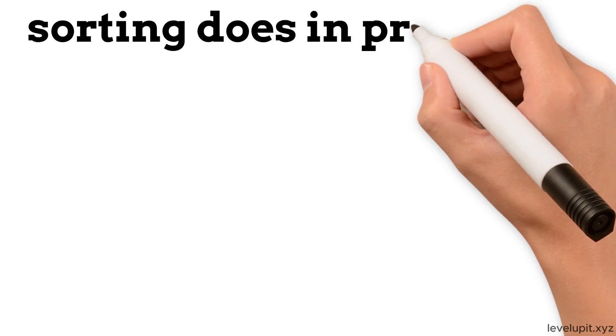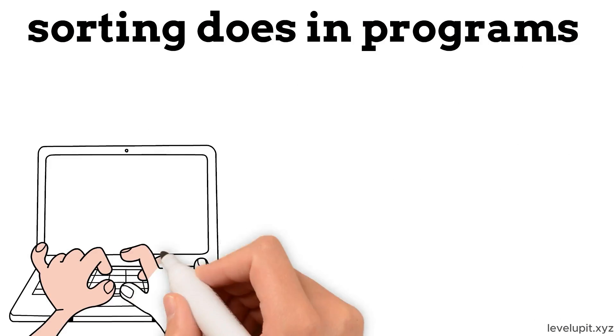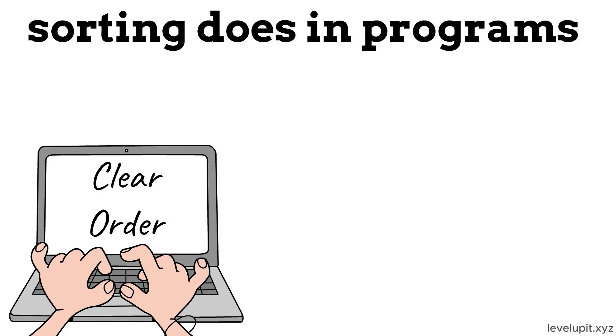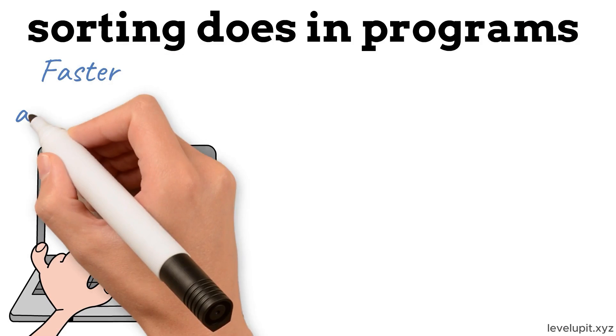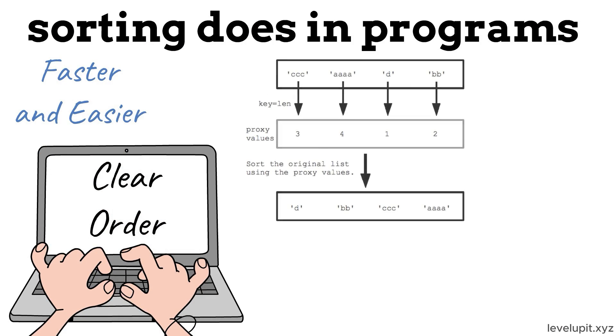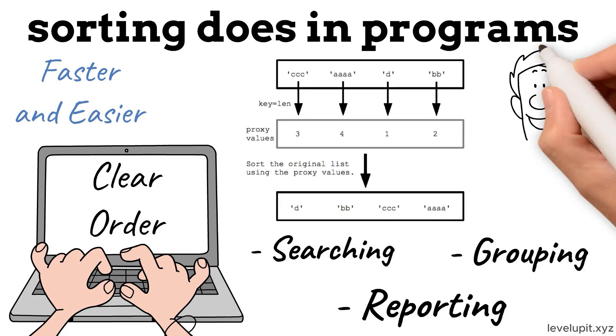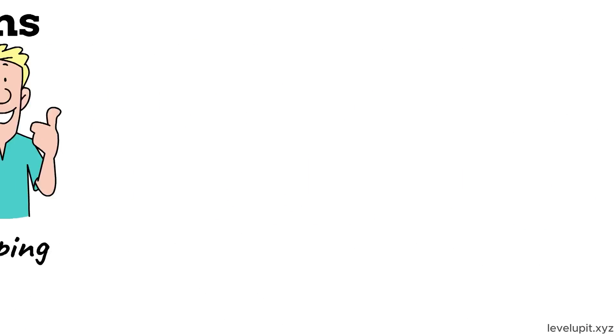That is what sorting does in programs. It takes a collection of values and puts them in a clear order, so everything else works faster and easier. Sorting helps with searching, grouping, reporting, and almost any task where order matters.